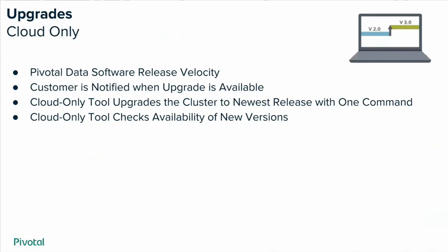Upgrades. To take advantage of Pivotal's very fast software release velocity, with new versions coming out very, very quickly, there's now a new upgrade utility built into the cloud marketplaces for Greenplum. You get notified when a new version is available and then you can run a command to upgrade the database automatically with one command — no need to download the software or copy it out to all the nodes.